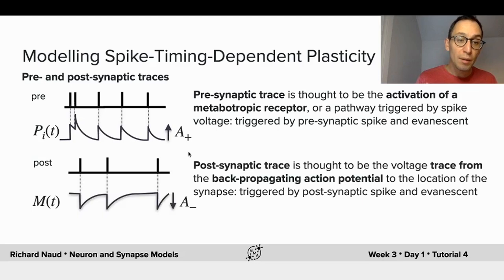Conversely, we have a post-synaptic trace. Whenever a post-synaptic spike is emitted, the action potential is backpropagating to the location of the synapse and this leaves a trace that may look like this. Whenever we have a post-synaptic spike, we have a jump and then linear dynamics back to a stationary point. Here we'll choose the jump to be negative and control this with a parameter A−, and we call the trace M.